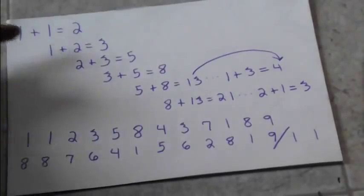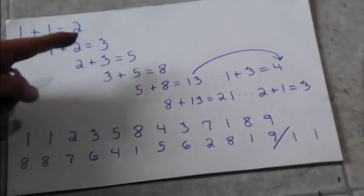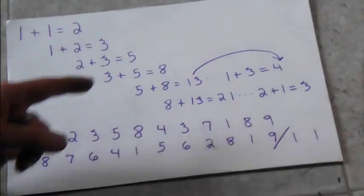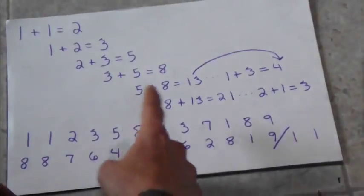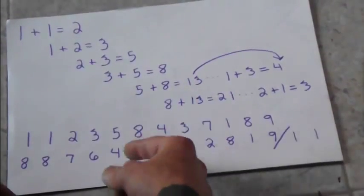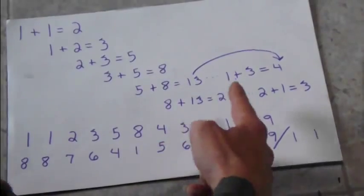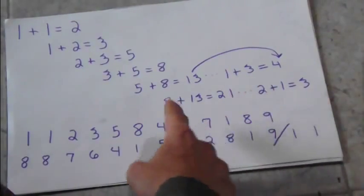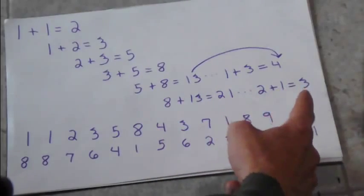So what I did, Fibonacci sequence: 1 plus 1 is 2, 1 plus 2 is 3, 2 plus 3 is 5, 3 plus 5 is 8. Keep doing these calculations, 5 plus 8 is 13. 13 is a double digit, so I break it down to a single digit, 1 plus 3 is 4. 8 plus 13 is 21, 2 plus 1 is 3.